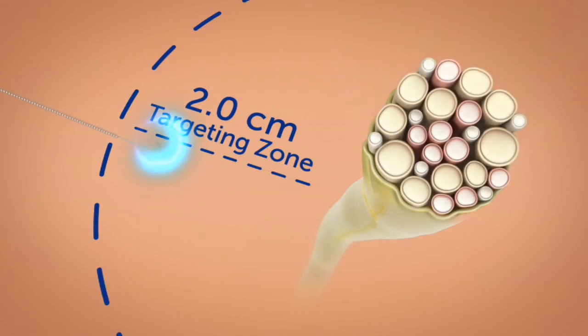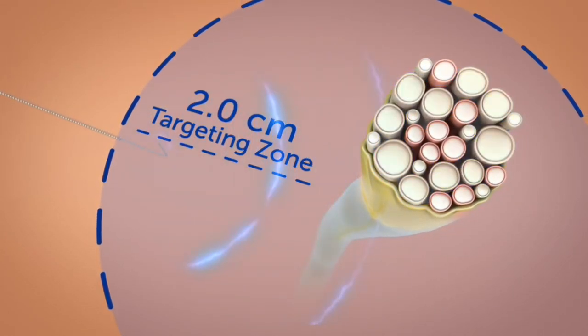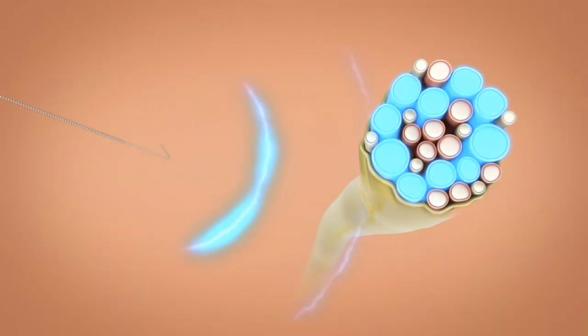When the lead is connected to the pulse generator, narrow stimulation pulses preferentially activate sensory fibers without activating non-targeted pain and motor fibers.